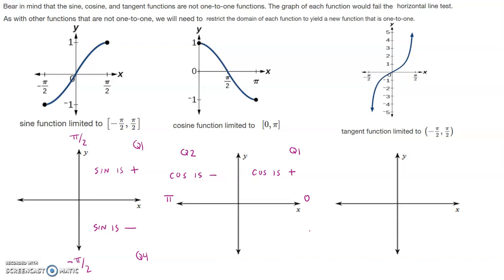Looking at our tangent function, we're restricted to negative pi over 2 to positive pi over 2, so that's putting us back in quadrant 1 or quadrant 4. In quadrant 1 tangent is positive, and in quadrant 4 tangent is negative.